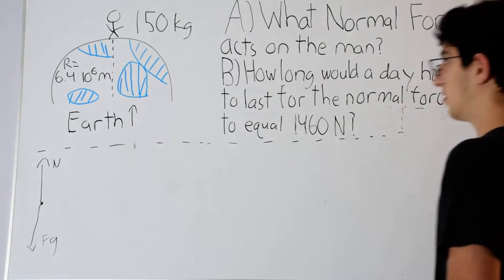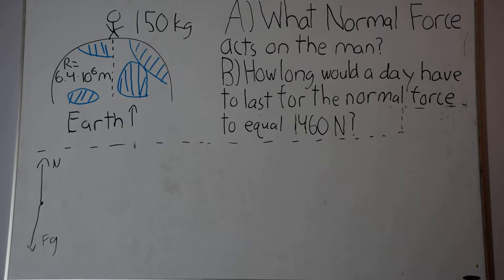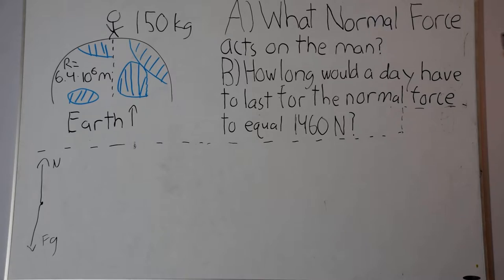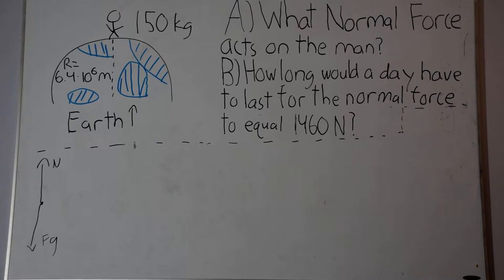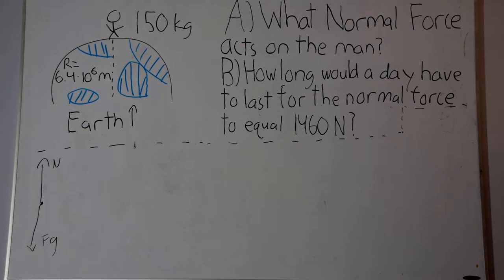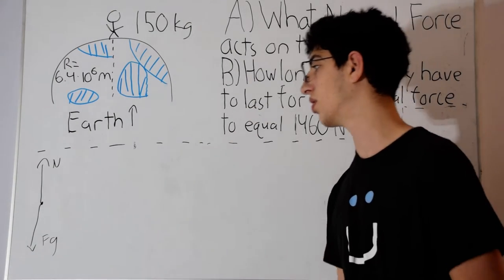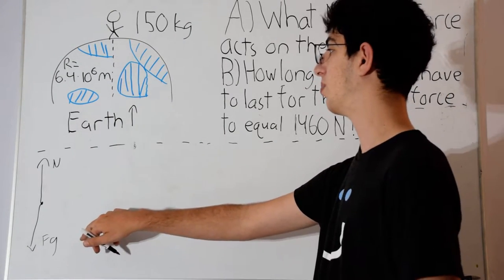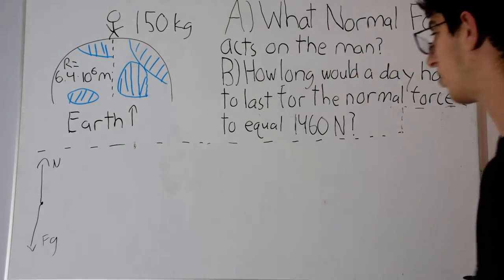We might think that this man has no acceleration, but really he's rotating around the earth. We all are rotating around the earth. So he is going to have some centripetal acceleration, and this centripetal acceleration is going to be towards the center of the earth, which is the center of rotation. It's going to be in the same direction of gravity, which means that gravity, which is causing the acceleration, must have a larger magnitude than the normal force.